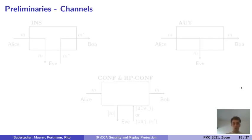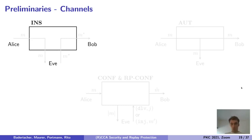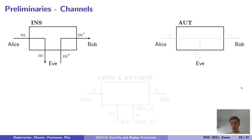Now let's go into some preliminaries about channels. We consider four types of channels in this work. The first is the insecure channel: whenever Alice inputs a message m into the insecure channel, this message is simply output to Eve. Whenever Eve inserts a message m* into the insecure channel, this message is simply output to Bob. In the authenticated channel case, whenever Alice inputs a message, this message is immediately sent to both Eve and Bob. It is authenticated because only Alice can input messages into the channel.